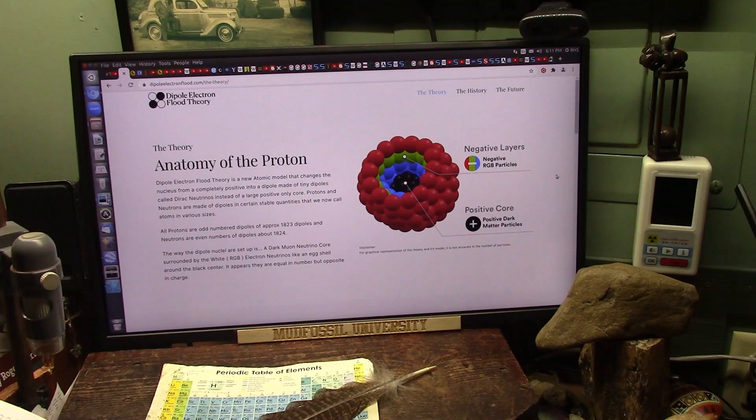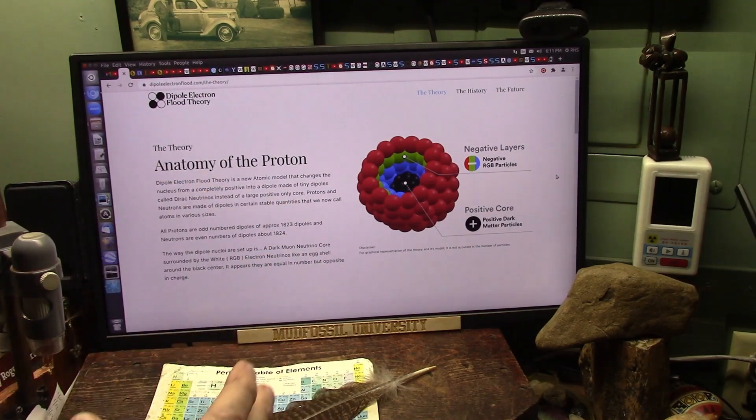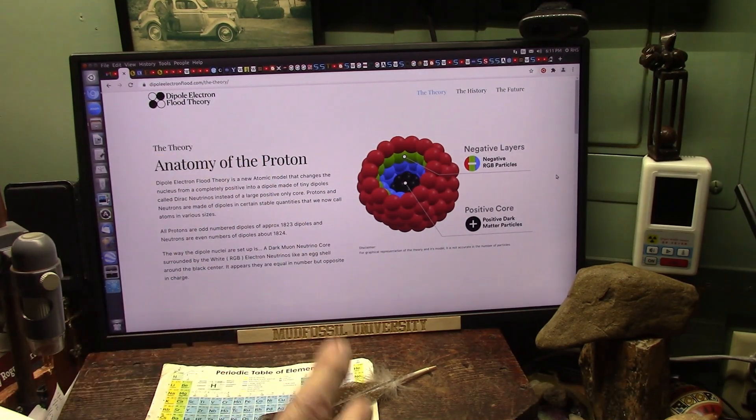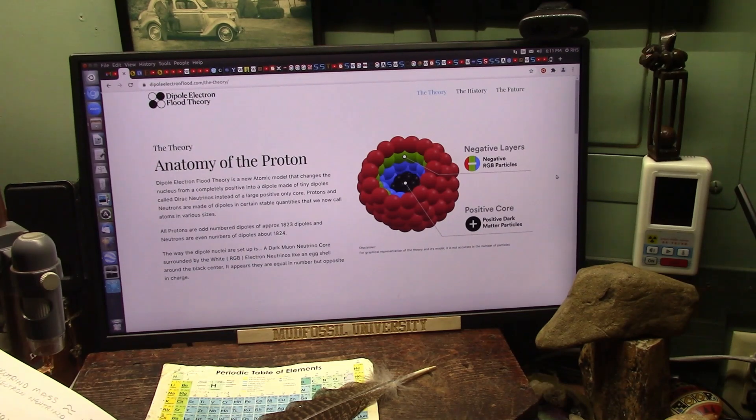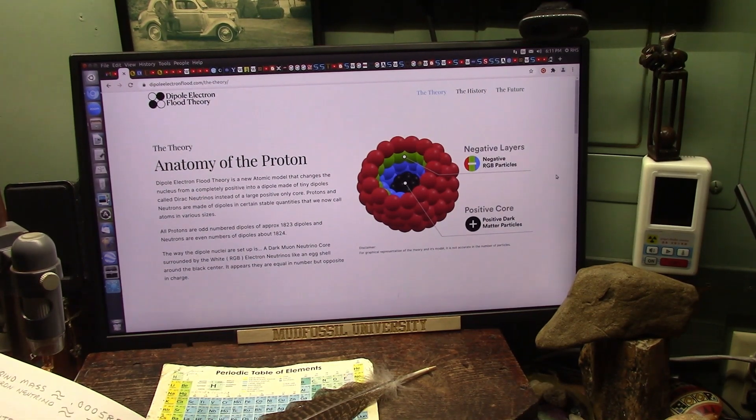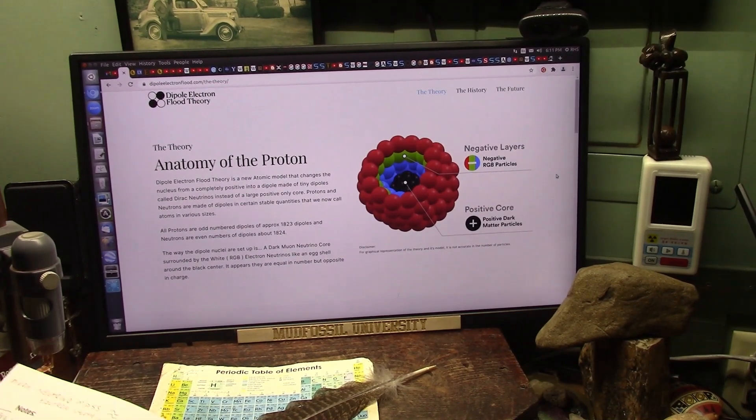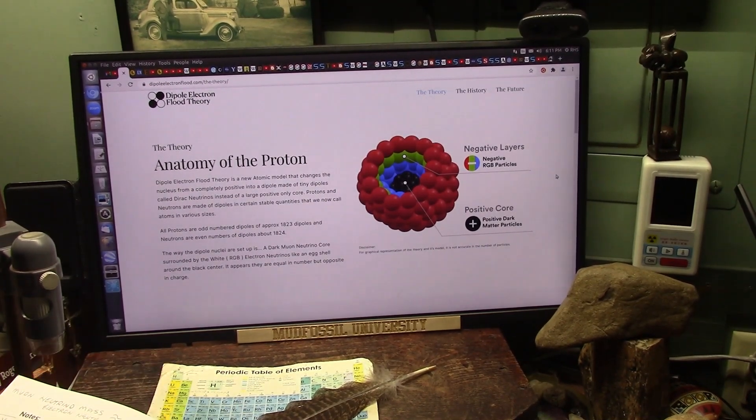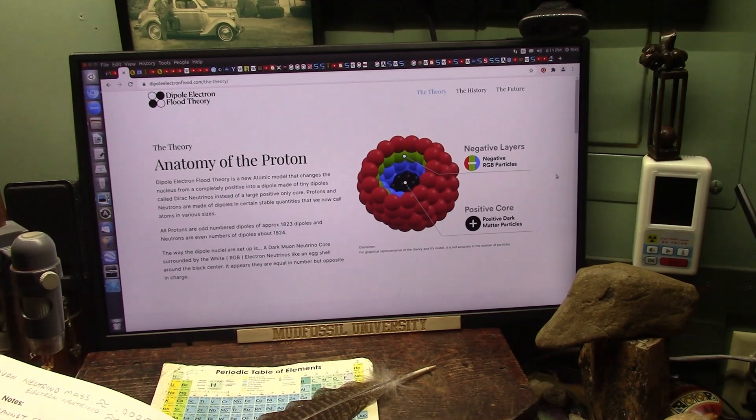Now I'm going to be showing them, like I say, there's 1823 dipoles. A dipole is just nothing more than a magnet, a bar magnet. And there's 1823 or so in that area that make up a nucleus. That's going to be my claim.